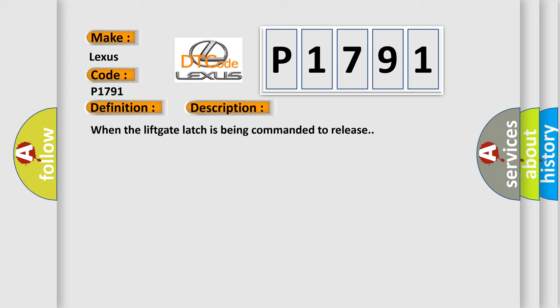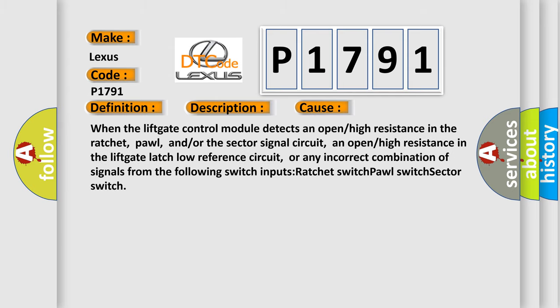This diagnostic error occurs most often in these cases: when the liftgate control module detects an open or high resistance in the ratchet pole and/or the sector signal circuit, an open or high resistance in the liftgate latch low reference circuit, or any incorrect combination of signals from the following switch inputs: ratchet switch, pole switch, and sector switch.